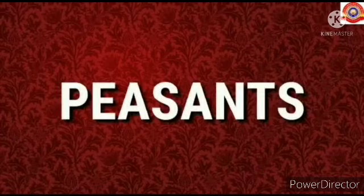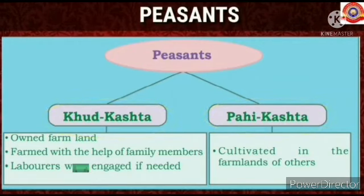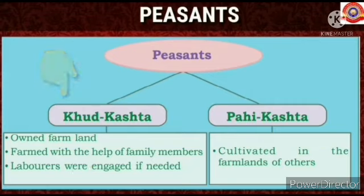Next, peasants. According to the Mughal period, there were two types of peasants: Kutkasta and Pahikasta. Kutkasta farmed on their own farmland with the help of family members, and laborers were engaged if needed. Pahikasta cultivated on the farmlands of others.